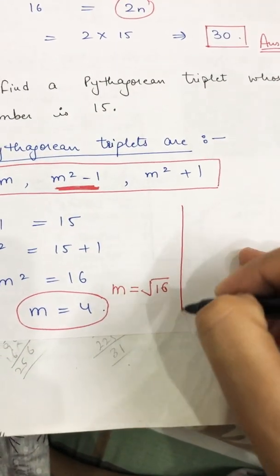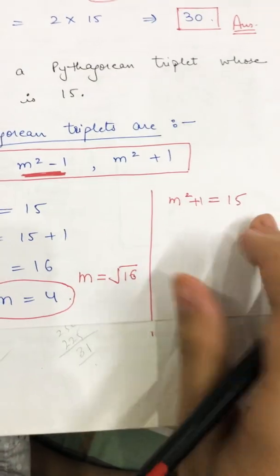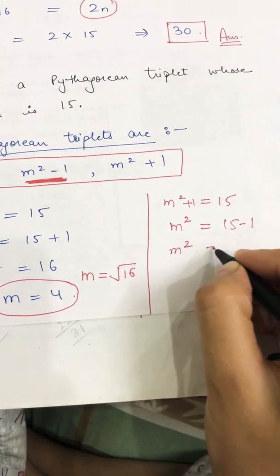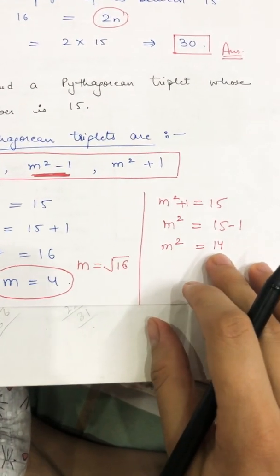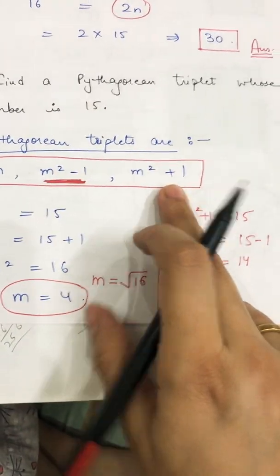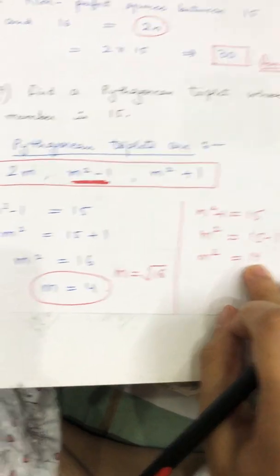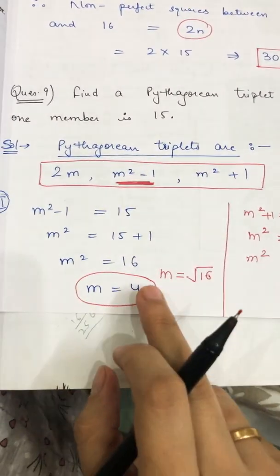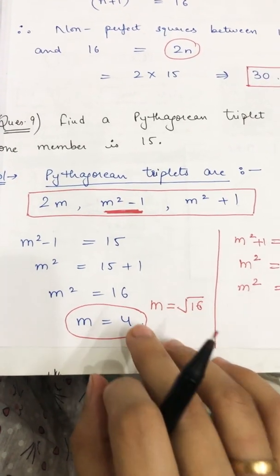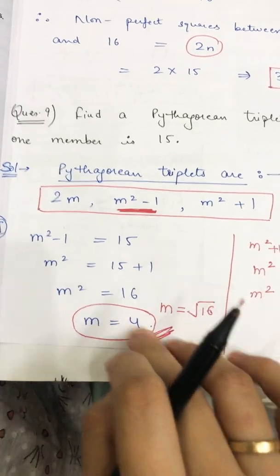Try m²−1 = 15: then m² = 16, so m = √16 = 4. The right-hand side (16) is a perfect square — this works. Now try m²+1 = 15: then m² = 14. But 14 is not a perfect square of any value, so this comparison is wrong. Since m²−1 gave a valid result, m = 4.